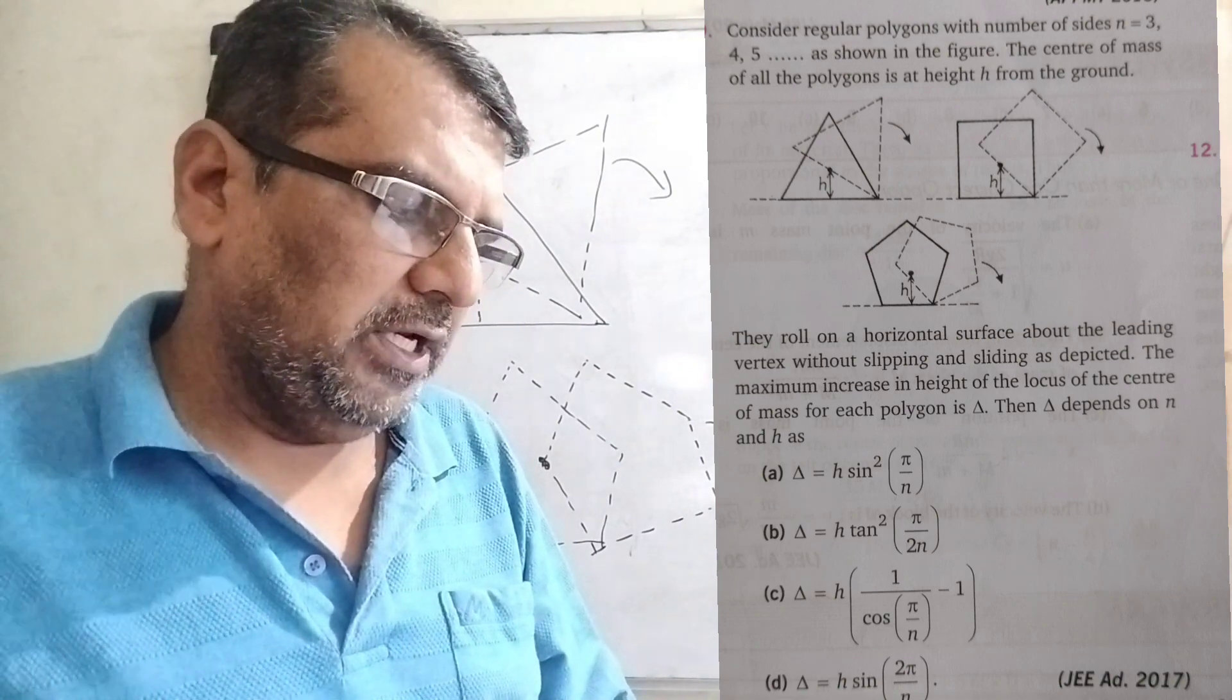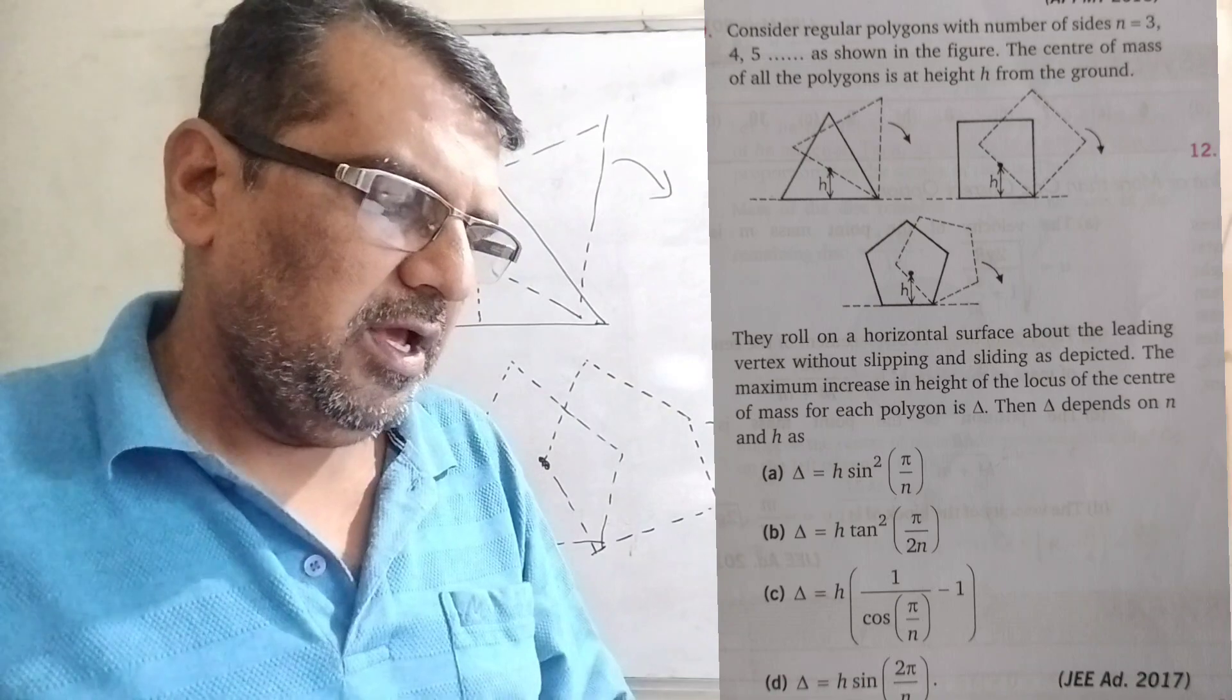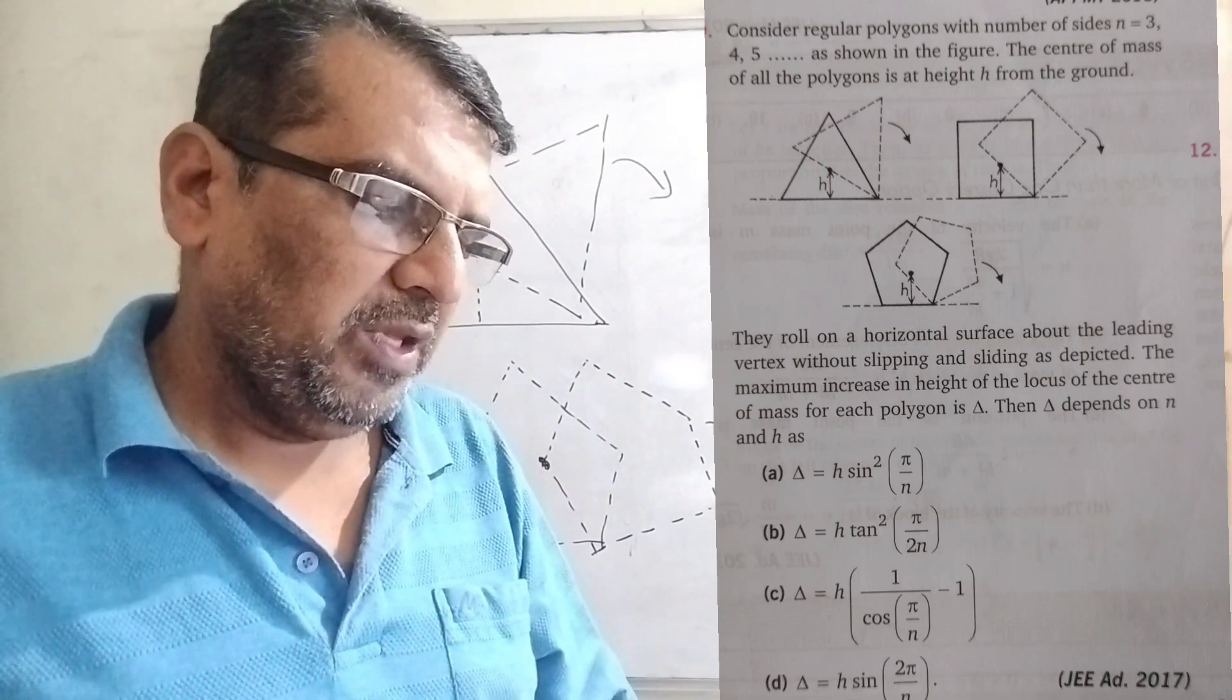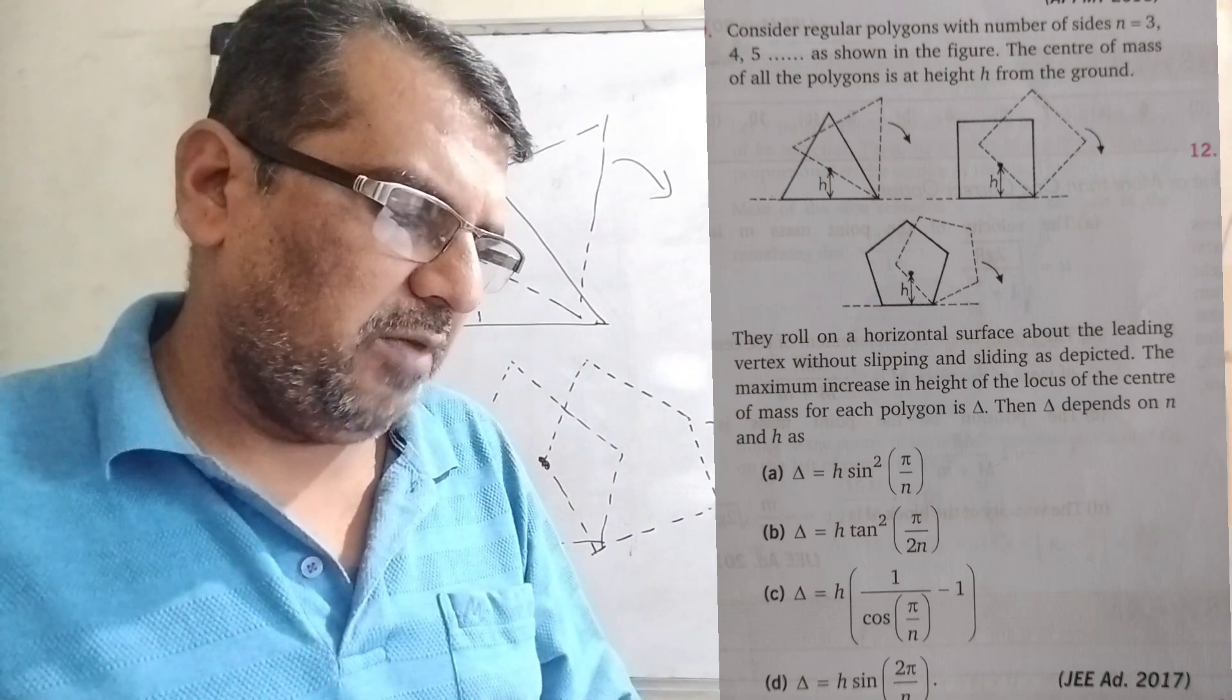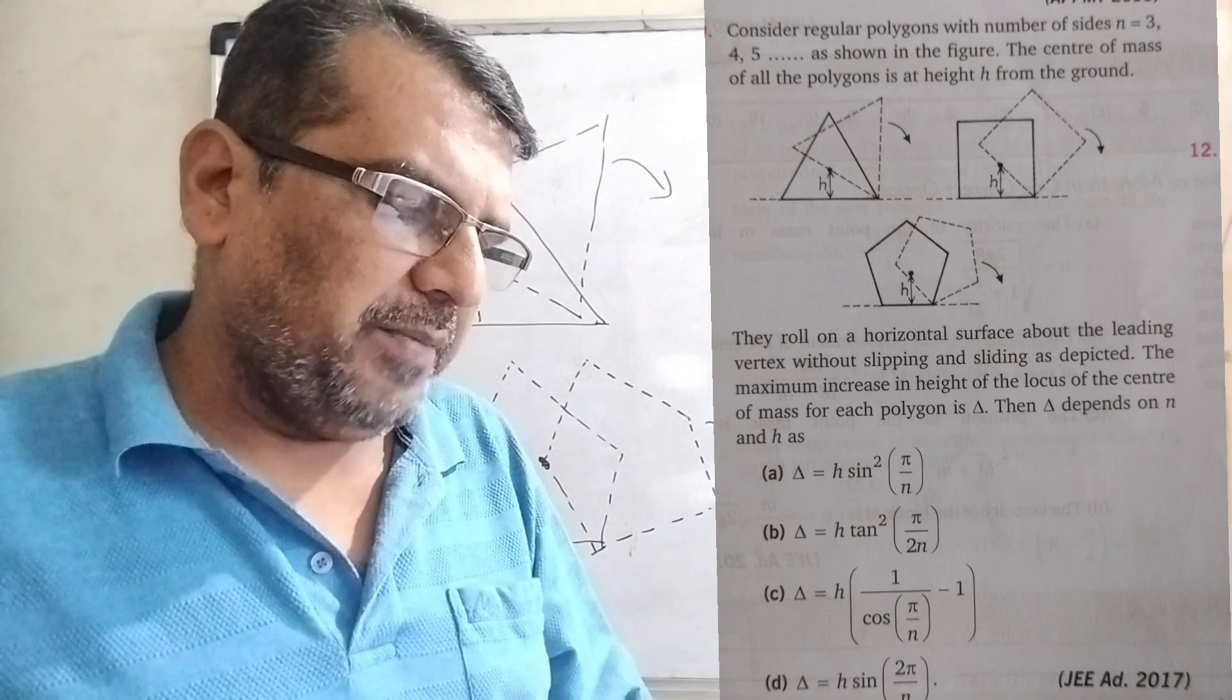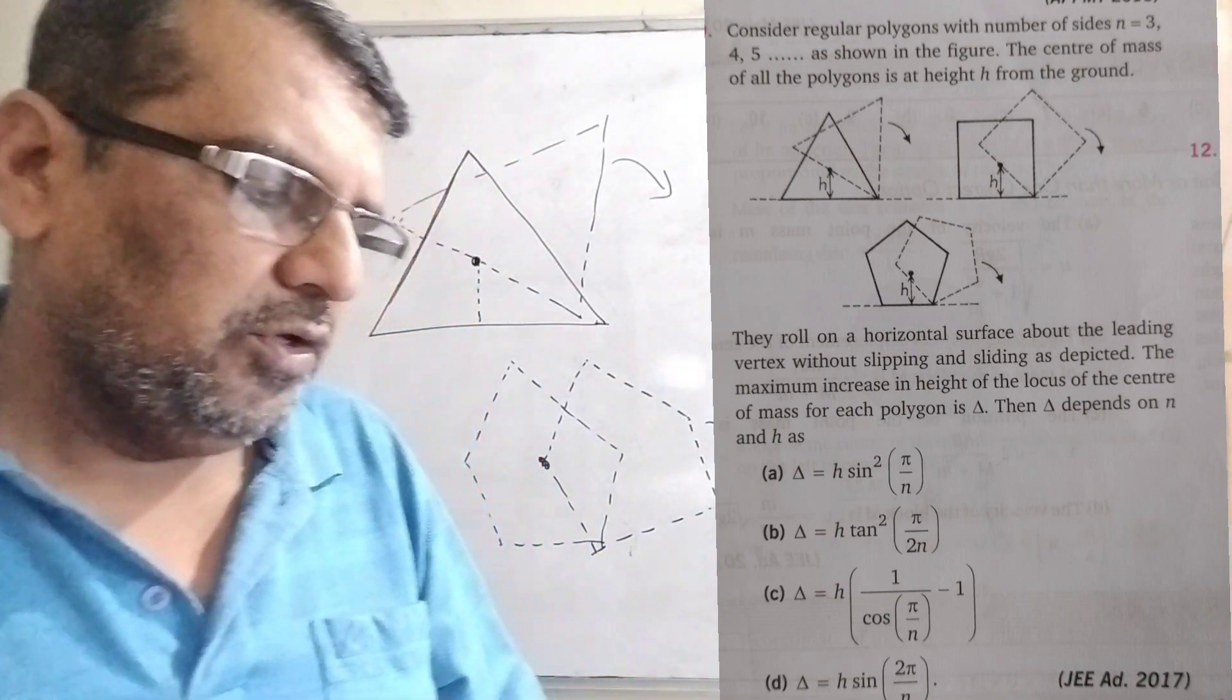The maximum increase in height of the locus of the center of mass for each polygon is Δ. Then Δ depends on n and h as you have given four options.